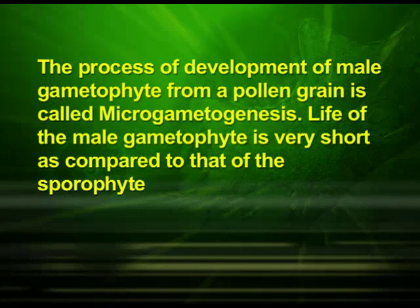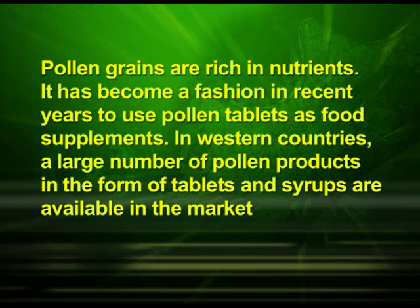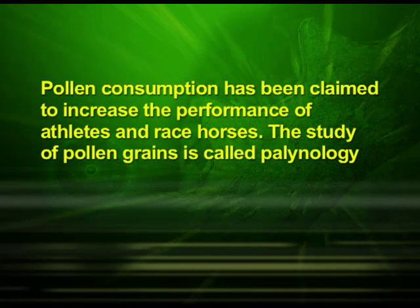The generative cell divides into two male gametes. The process of development of the male gametophyte from a pollen grain is called microgametogenesis. The life of the male gametophyte is very short compared to that of the sporophyte. Pollen grains of many species cause severe allergies and bronchial afflictions in some people, often leading to chronic respiratory disorders like asthma and bronchitis. On the other hand, pollen grains are rich in nutrients. It has become fashionable in recent years to use pollen tablets as food supplements, and in western countries a large number of pollen products in the form of tablets and syrups are available in the market. Pollen consumption has been claimed to increase the performance of athletes and racehorses.